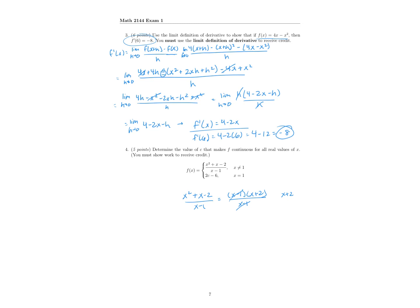We want to find c where that point equals 3, so we set 3 equal to 2c minus 6. Adding 6 to both sides gives 9 equals 2c, so c equals 9 over 2. We want that value so that the function f will be defined at every real value of x.